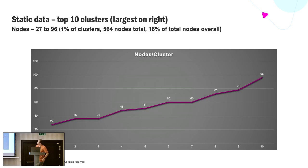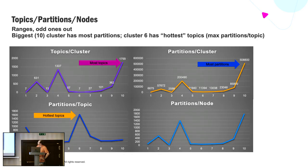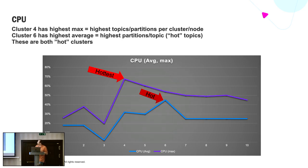For static data on the top 10 clusters, we had between 27 and 96 nodes. Looking at topics, partitions, and nodes in more detail, two clusters stand out. One is the biggest, which has the most topics and most partitions. There's also cluster number six — what I call the 'hottest topic' — which has the highest partitions per topic out of all of them, and that's one our tech ops people had already identified as interesting. Looking at CPU utilization, there are a couple of standouts in terms of how heavily those clusters are utilized.